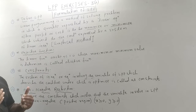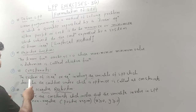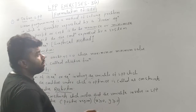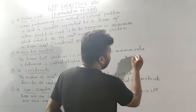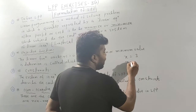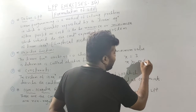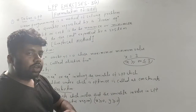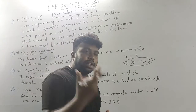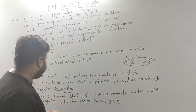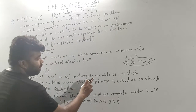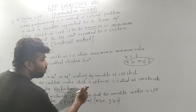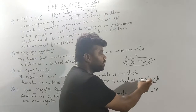Next, constraints. The system of inequations or equations involving the variables of the LPP — where the inequation means ax is greater than or less than some value — which describes the conditions under which optimization is done, is called a constraint.